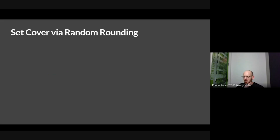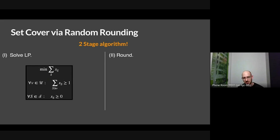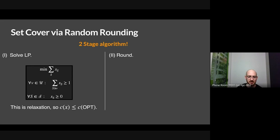We want to solve the random order online set cover problem. First, let's understand how you might solve set cover offline. Here's one convenient approach we teach in approximation algorithms courses — a two-stage algorithm: solve an LP and then round the LP. There's a variable for every set x_s. We're minimizing the fractional number of sets we're buying, subject to the constraint that for every element you need to fractionally pick at least one set to cover it.